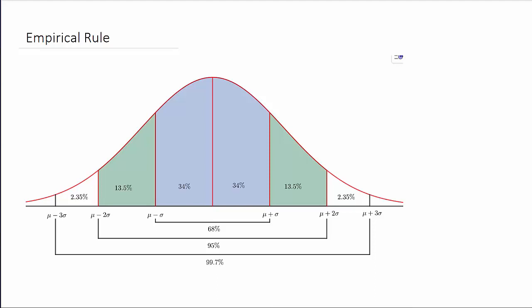We're going to look at a video on the empirical rule. This is typically for a distribution that's bell-shaped, or kind of like a normal distribution. You can see the curve that we have here. This is a normal distribution, and right here in the middle at the highest point, we have the mean mu.